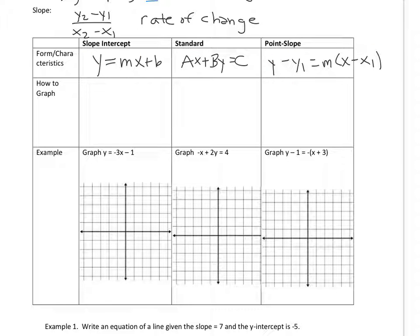So when you graph slope-intercept form, you start with the Y-intercept. So I'm going to do this example down here. The Y-intercept of this line is negative 1, so I make a dot at negative 1. And this value, M, is the slope, the rise over run.